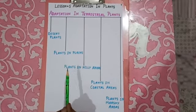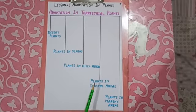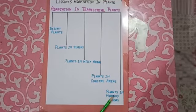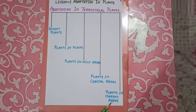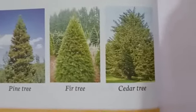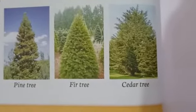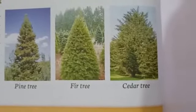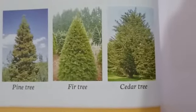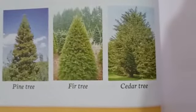Today we will study about plants in hilly areas, plants in coastal areas and plants in marshy areas. Heavy snowfall occurs in high mountainous regions. The trees growing in these regions have adapted themselves to cold and dry climatic conditions.